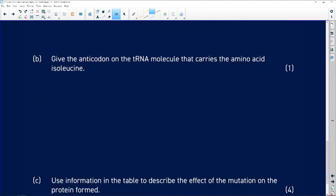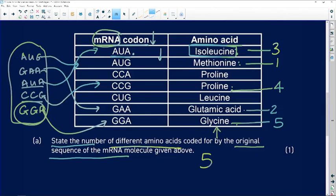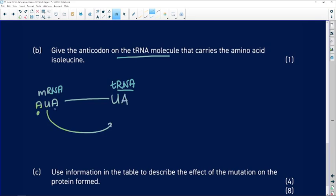Give the anti-codon on the tRNA molecule that carries the amino acid isoleucine. Here's isoleucine. Its mRNA codon is AUA. So if the mRNA codon is AUA, what is the anti-codon on the tRNA? We're going to see that adenine is going to pair with uracil. Not thiamine because there's no thiamine in RNA. The uracil is going to pair with an adenine and that adenine is going to pair with another uracil.